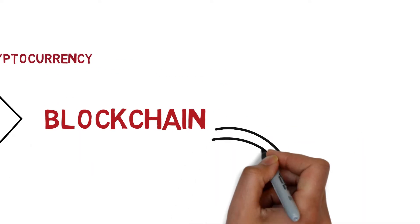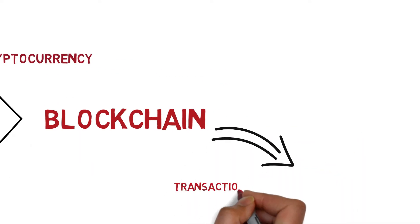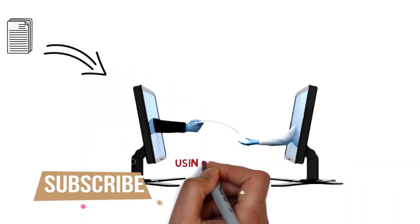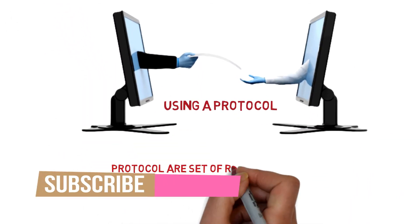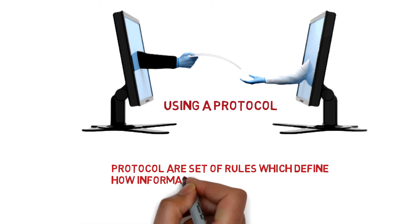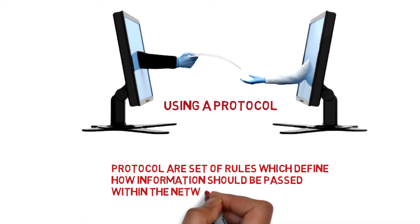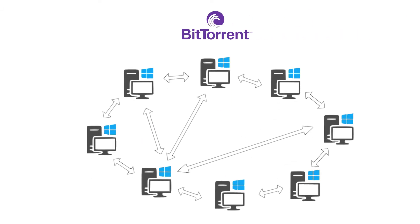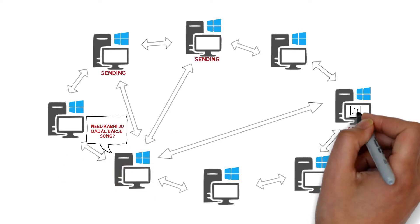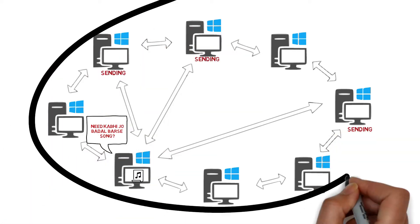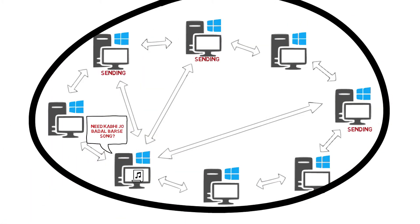Blockchain is basically a database. This database is passed within the network by using a protocol. With the protocol, I mean that these rules are defined so that the information within the network will be communicated. For example, if we take BitTorrent, BitTorrent's rules, which are nodes in the network follow for sharing the files — the same concept is used in cryptocurrency.